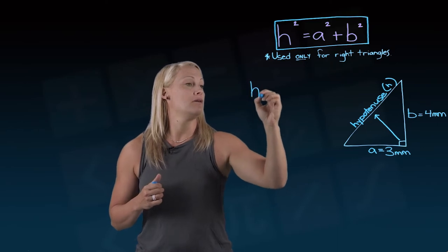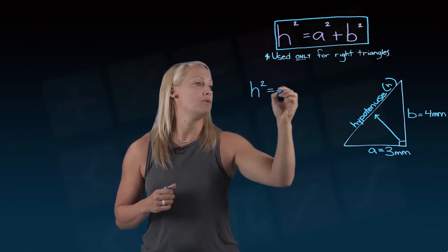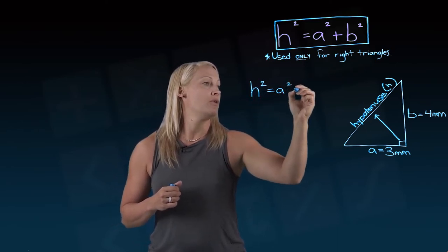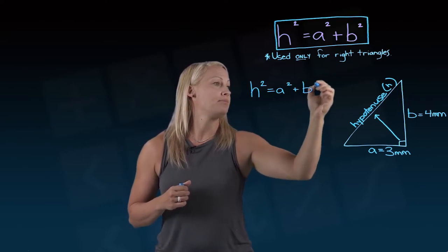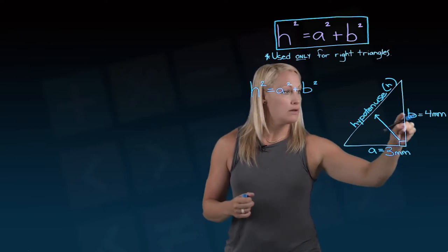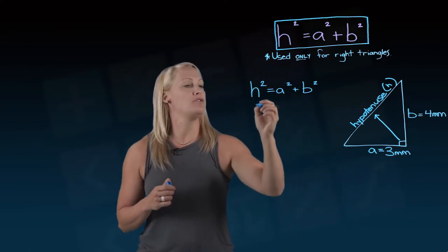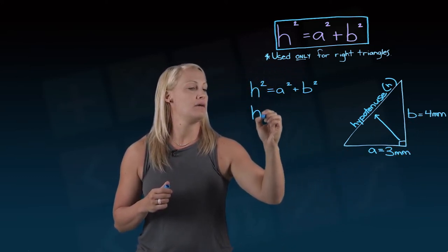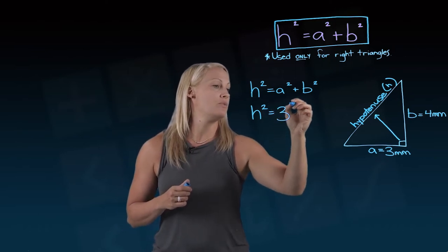So we can use Pythagorean theorem to do that. So let me rewrite it here. So we know that h squared equals a squared plus b squared. And I'm going to plug my values in for a, 3, and my value for b in as well, which is 4. So let's rewrite that. So h squared equals 3 squared plus 4 squared.